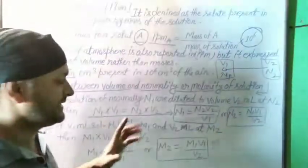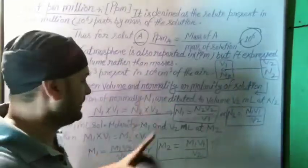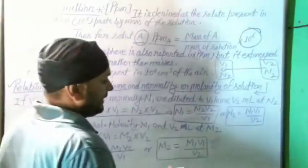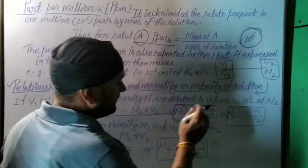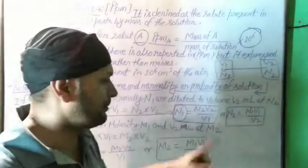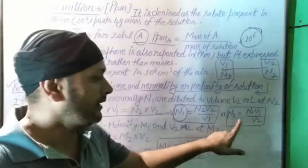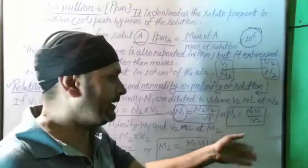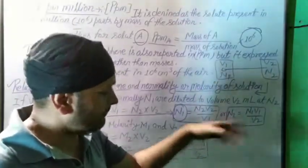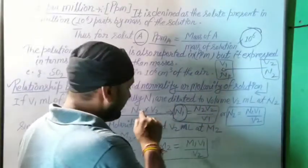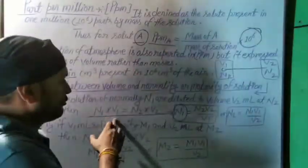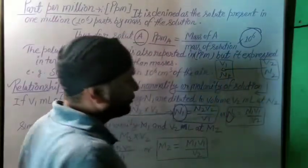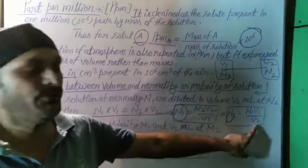Now, if we need to find the normality of one phase, we rearrange the formula. If we need to find N1 (first normality), the formula becomes N1 = N2V2 upon V1. Again, if we need to find the second normality N2, from the base formula N1V1 = N2V2, we get N2 = N1V1 upon V2.